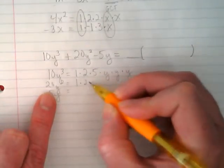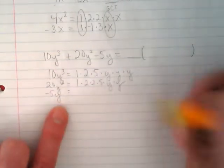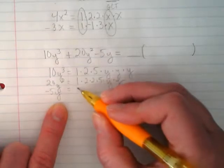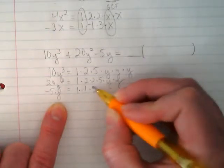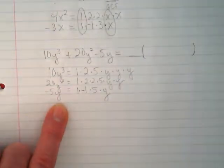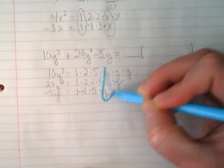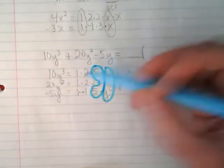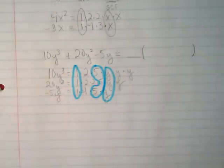10y to the third would break down to 1 times 2 times 5. And how many y's? 3. 3 y's. What would 20 break down to? Really similar to the first one, but we get an extra 2 and only 2 y's. And then we have a negative 5y at the end here. So it also gets its positive one, but it gets also a negative 1, a 5, and a y. They all have a y in common, don't they? 3 y. And they all have a 5 in common. And they have a positive 1 in common. So what's being factored out for the GCF is a positive 5y.